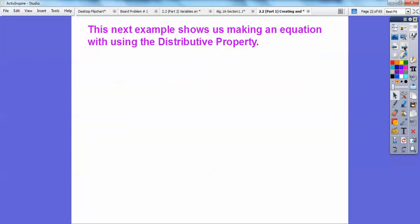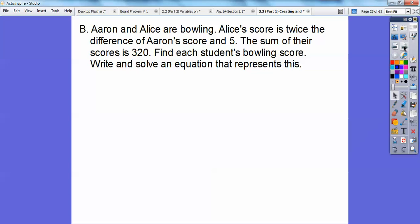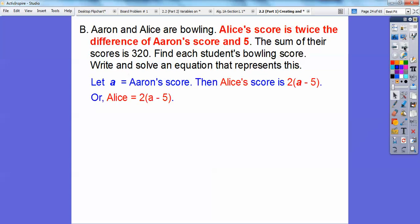This next example shows us how to make an equation using the distributive property. We didn't solve that one but we certainly could have, and we'll do that with this one here. Aaron and Alice are both bowling. Alice's score is twice the difference of Aaron's score and 5. That one's a little tricky right there, we'll come back to that. And the sum of their scores is 320. We're going to add Aaron's and Alice's, it's going to add up to 320. Find the student's bowling scores. Write and solve an equation.